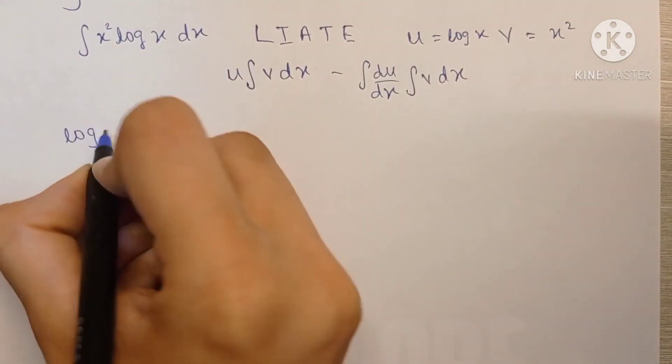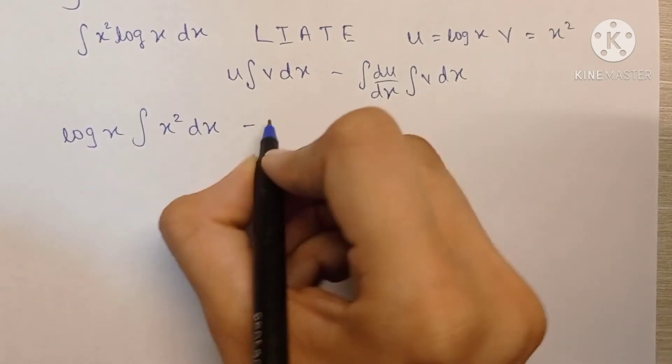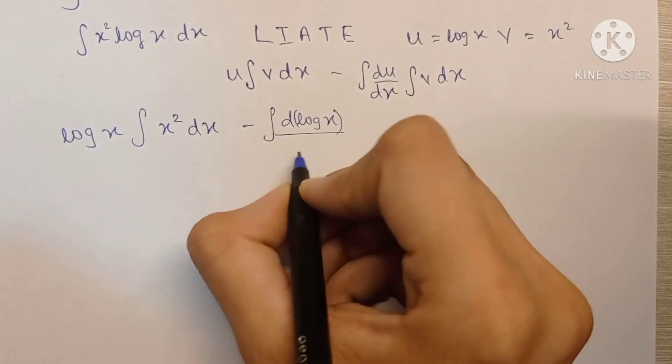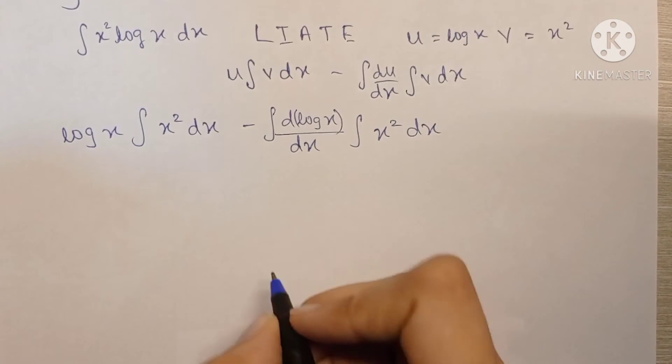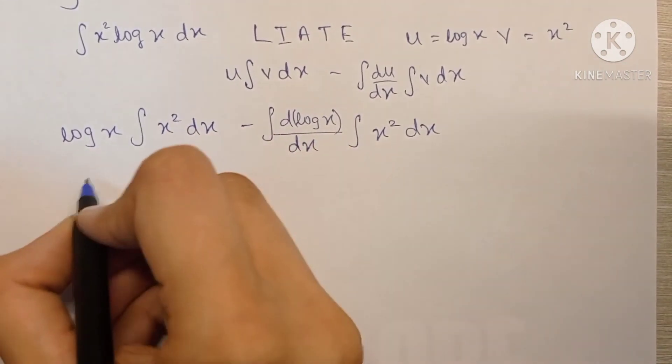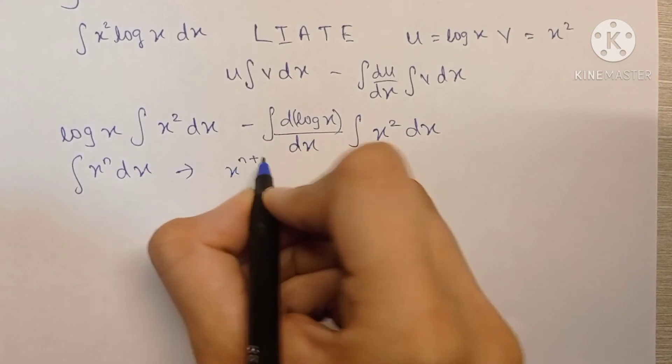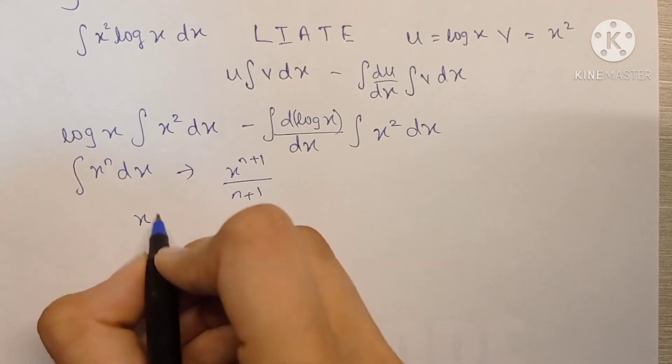So u, that is log x, into the integration of x square dx minus the integration of differentiation of log x into the integration of x square dx. The integration of x raised to n dx is x raised to n plus 1 upon n plus 1, so the integration of x square would be x cube upon 3.